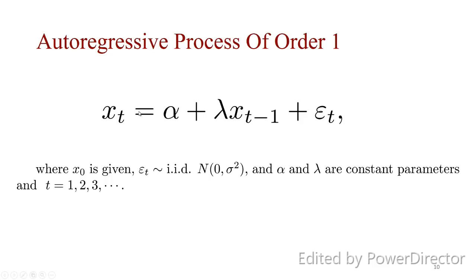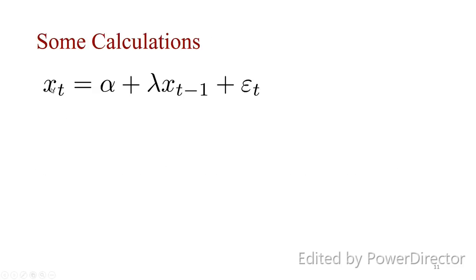An autoregressive process of order one, AR(1), is when a stochastic process x_t depends on x_{t-1}. It is of order one because the observation only depends on the previous observation. If it were order two, we would also include a term lambda_2 * x_{t-2}, and so on. Here alpha and lambda are constant parameters, x_0 is given (assumed zero for convenience), and the error terms are i.i.d. normal with mean zero and variance sigma squared — essentially a white noise process.